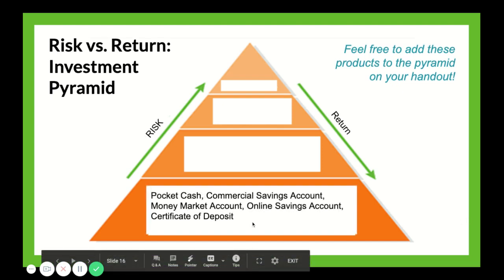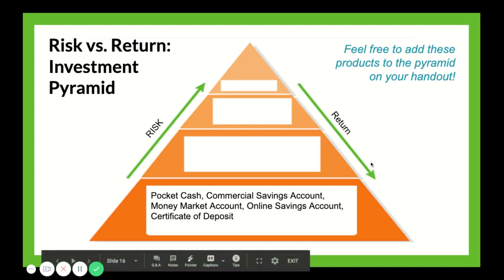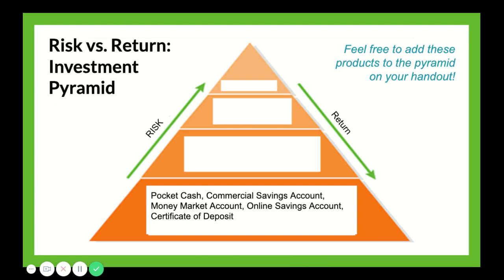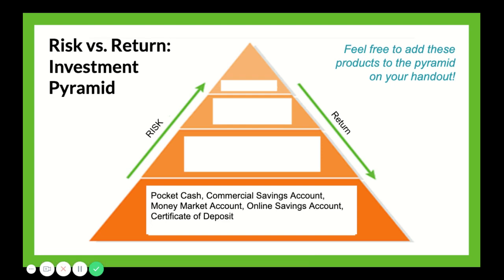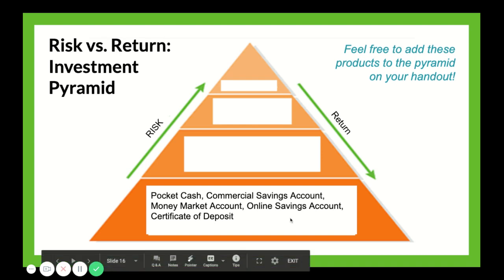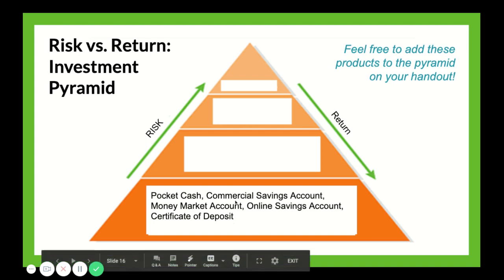At the bottom of the pyramid with the lowest amount of risk — meaning your money is pretty much 100% sure to be there when you want to take it out — but with very little return, are things like pocket cash, a commercial savings account, a money market account, an online savings account, or a certificate of deposit. A certificate of deposit, otherwise known as a CD, is a savings account that entitles the owner to receive a little more interest, but you have to leave your money in the bank for a fixed period of time — one, three, five, or some other number of years — and you can't access it without paying penalties.